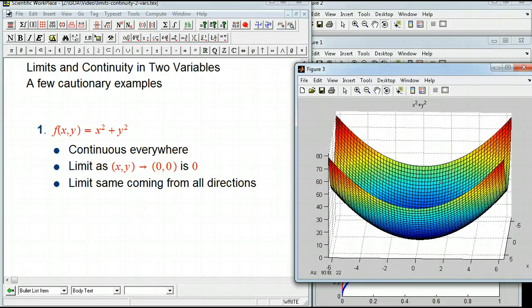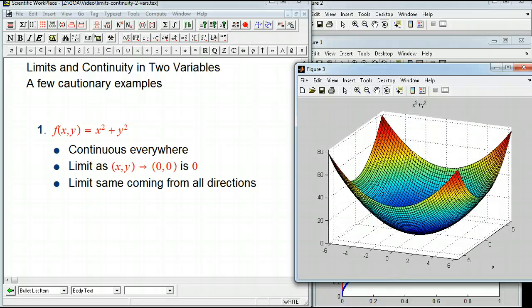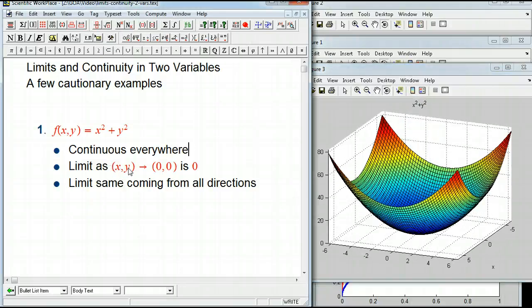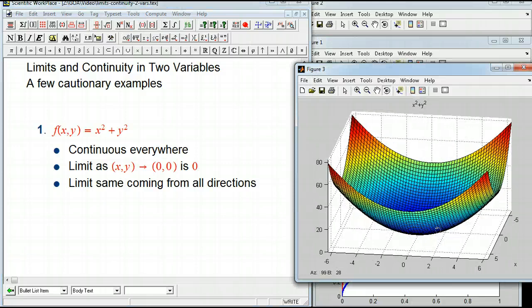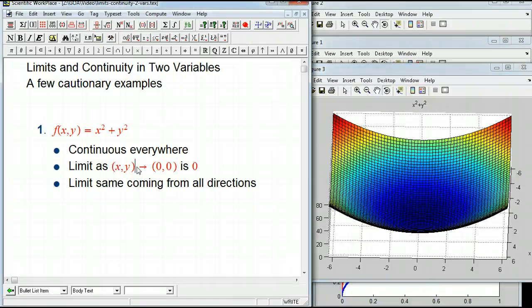The limit as (x,y) goes to (0,0) is equal to 0. So that means that when I put in any point as the input, any (x,y), if it's close to (0,0), if it's close to the origin, the value of the function is very, very close to 0. And you can think of that as a process of picking a bunch of different xy points that approach the origin, and if that's true, then the value of the function, x² + y², should also approach 0.